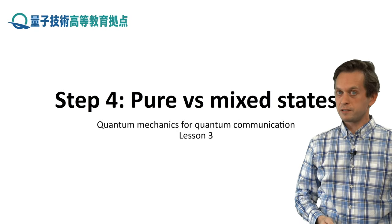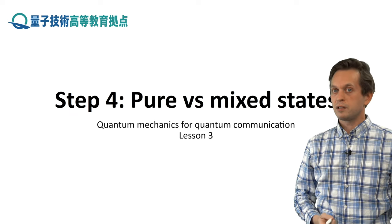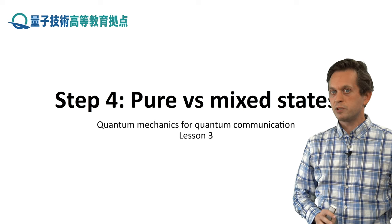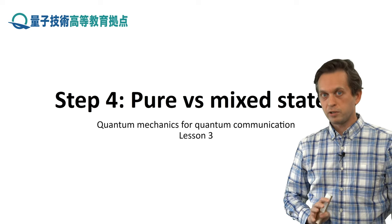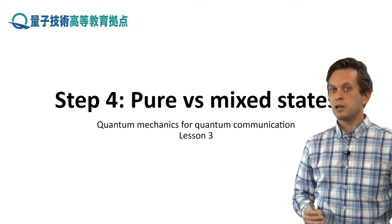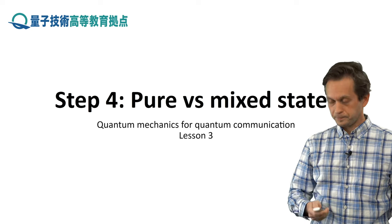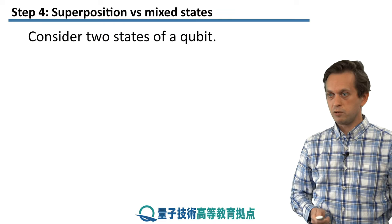Step 4: Pure versus mixed states. So we have seen how to describe pure states and how to describe mixed states, and we've kind of hinted at the difference between them. Pure states describe states where we have full knowledge of the state, whereas mixed states include some uncertainty about the states. We don't have perfect knowledge of the state. So how can we actually see this difference in real life?